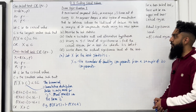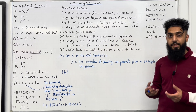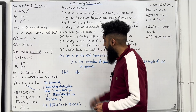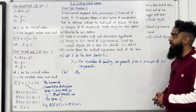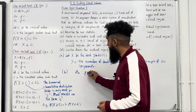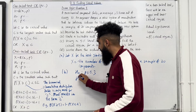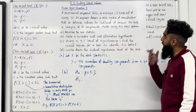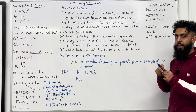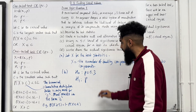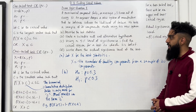Part B: state a suitable null and alternative hypothesis. H0 is what we assume to be correct. A mechanical component fails on average 3 times out of every 10, so our assumption is P = 3/10 = 0.3. For H1, the engineer believes his new system reduces the likelihood of failure, so we're testing that the proportion P has decreased: P < 0.3.